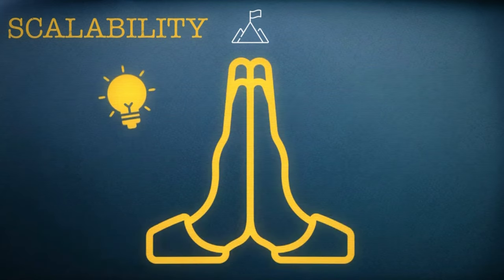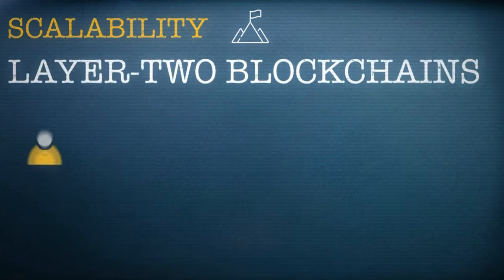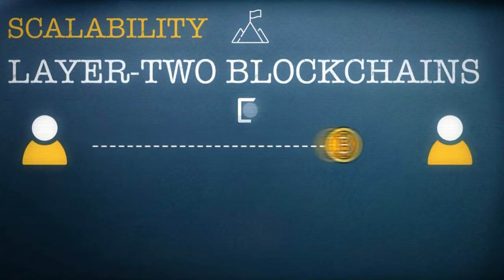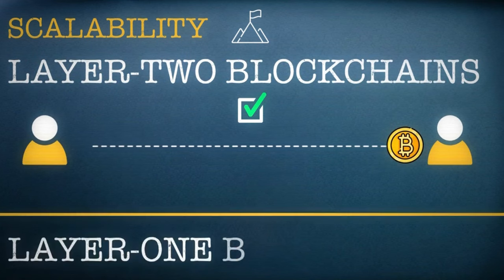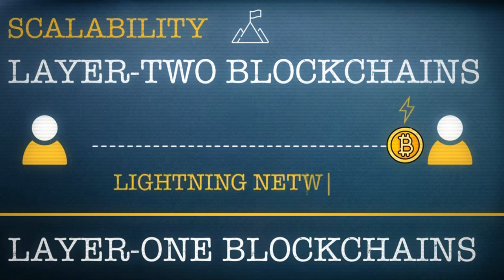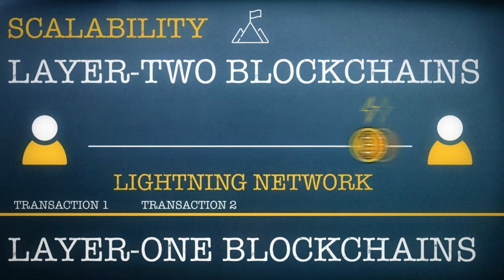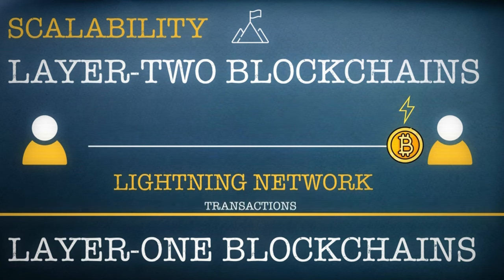Thankfully, solutions are beginning to emerge. Layer 2 blockchains can allow transactions to be confirmed faster. As their name suggests, they sit on top of a network, an extra layer to ensure things run smoothly. One of the most popular Layer 2 solutions for Bitcoin is the Lightning Network. This reduces congestion by allowing payments to take place instantly and off the blockchain. Details about transactions are then simplified and added to the main network later.